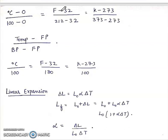First is the conversion of temperatures. Degree C minus 0 upon 100 minus 0 is equal to F minus 32 upon 212 minus 32, is equal to K minus 273 upon 373 minus 273.